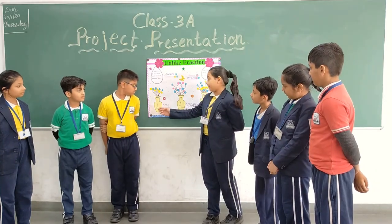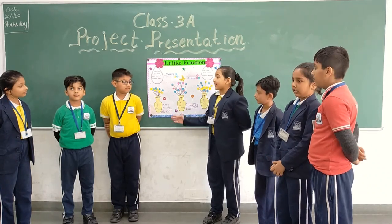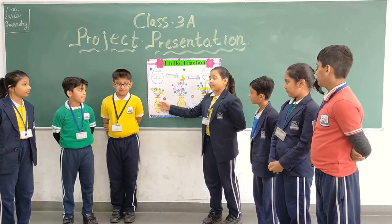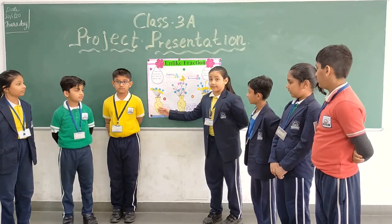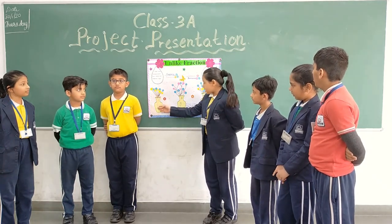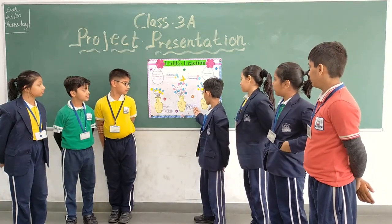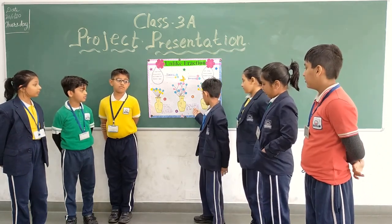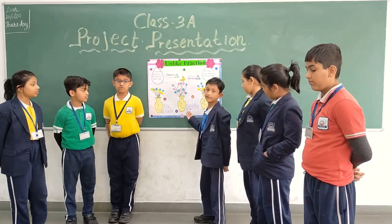For example, this flower pot has a total of 9 flowers. Out of these, 4 are blue and the rest are yellow. So we can take all flowers as the denominator and the 4 blue flowers as the numerator. So we can say that 4 out of 9 flowers are blue.